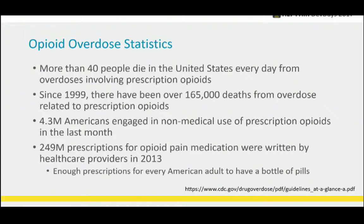This is from the CDC opioid guidelines — some opioid overdose statistics. This is pretty grim. 40 people die in the United States every day from opioid overdoses. 165,000 since 1999. I think 2014 was when this was prepared, so maybe even higher at this point.